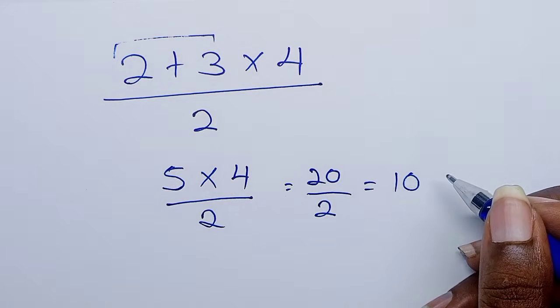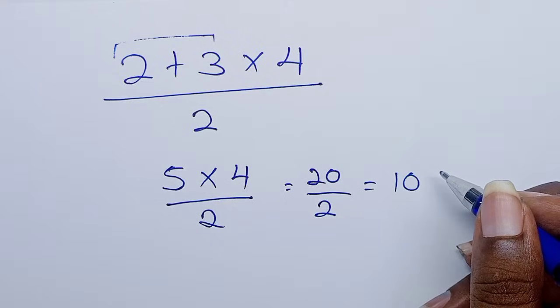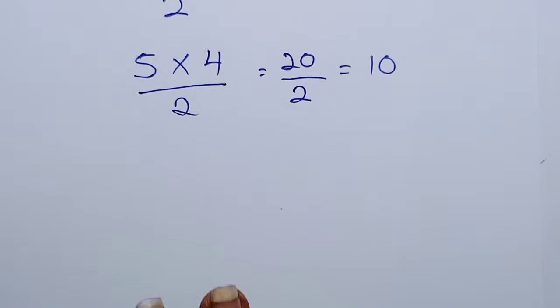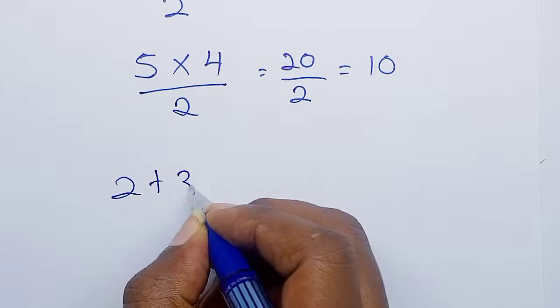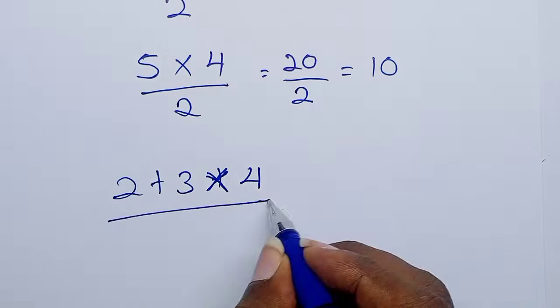Your answer is totally wrong because you've not followed the order of operations. You realize that when you do actually follow the order of operations, your answer will be different. So we have two plus three times four all divided by two.